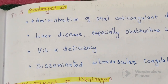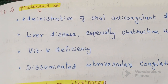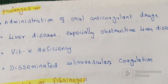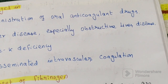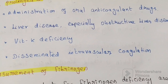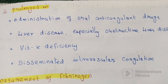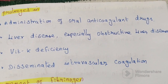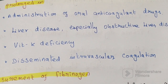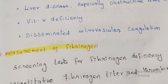One-stage prothrombin time is prolonged in: administration of oral anticoagulant drugs, liver disease (especially obstructive liver disease), vitamin K deficiency, and disseminated intravascular coagulation.